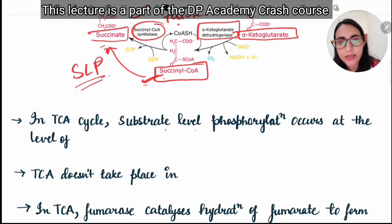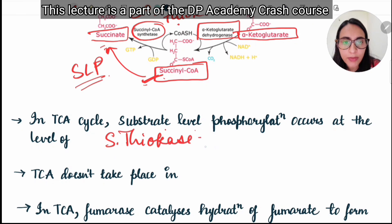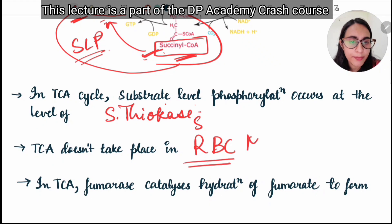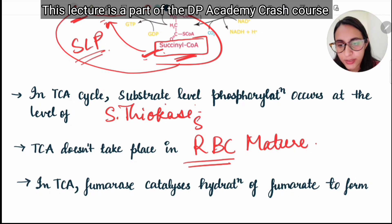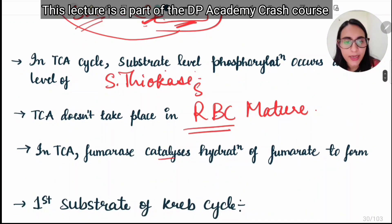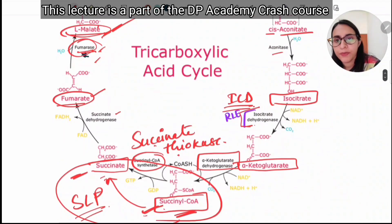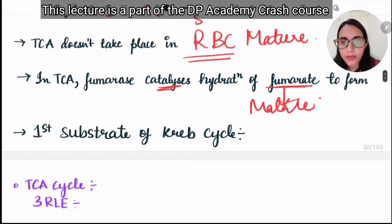To recap: substrate-level phosphorylation in the TCA cycle occurs at the level of succinate thiokinase, which converts succinyl-CoA to succinate. The TCA cycle does not take place in mature RBCs (erythrocytes) because there is no mitochondria. Fumarase catalyzes the hydration of fumarate to form L-malate. The first substrate of the Krebs cycle is pyruvate.